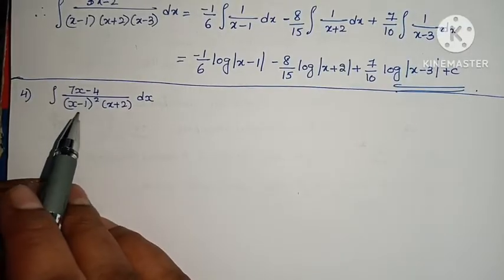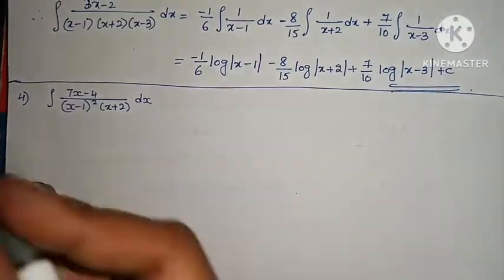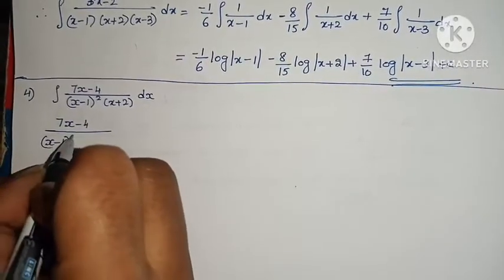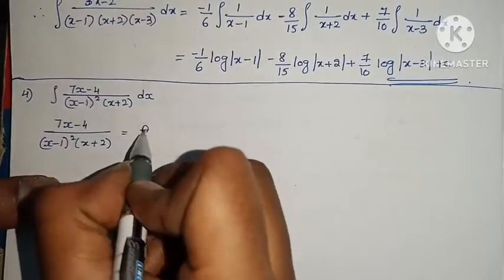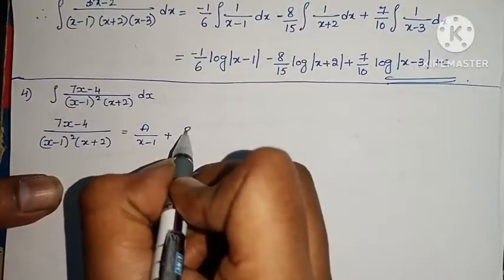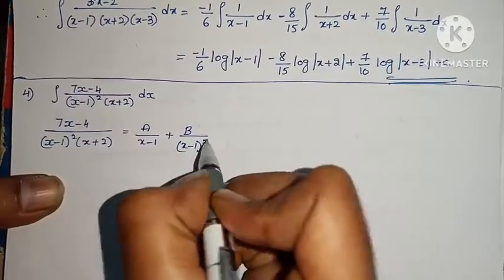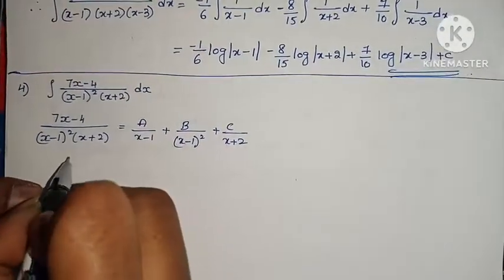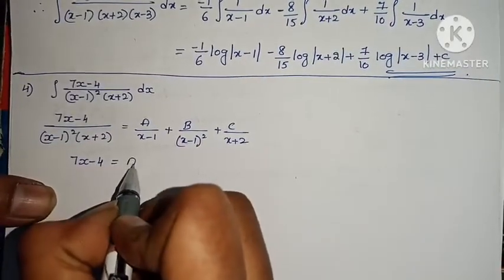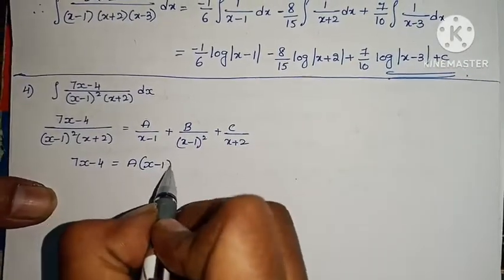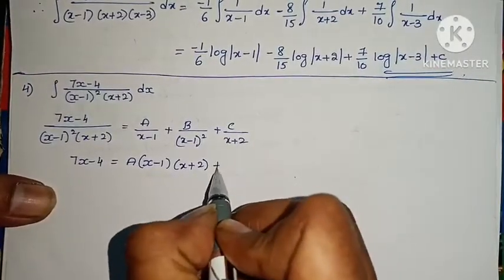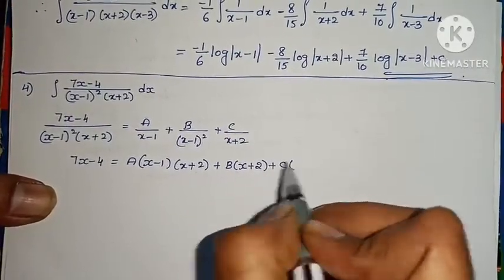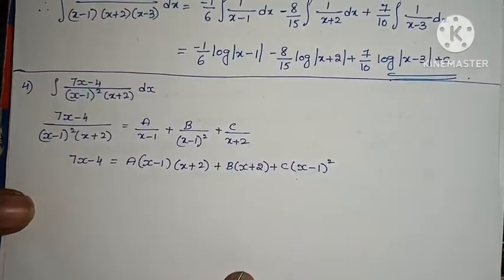Next question: integral of (7x minus 4) by [(x minus 1) squared times (x plus 2)] dx. For repeated linear factor, convert to partial fractions: A by (x minus 1) plus B by (x minus 1) squared plus C by (x plus 2). LCM gives: 7x minus 4 equals A(x minus 1)(x plus 2) plus B(x plus 2) plus C(x minus 1) squared.